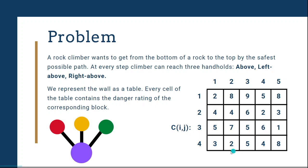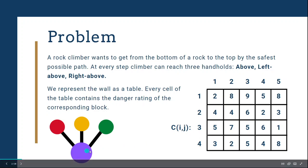A rock climber at this position can only go to the above three positions. We can represent the wall with this table, and each cell contains the danger rating for the cell.